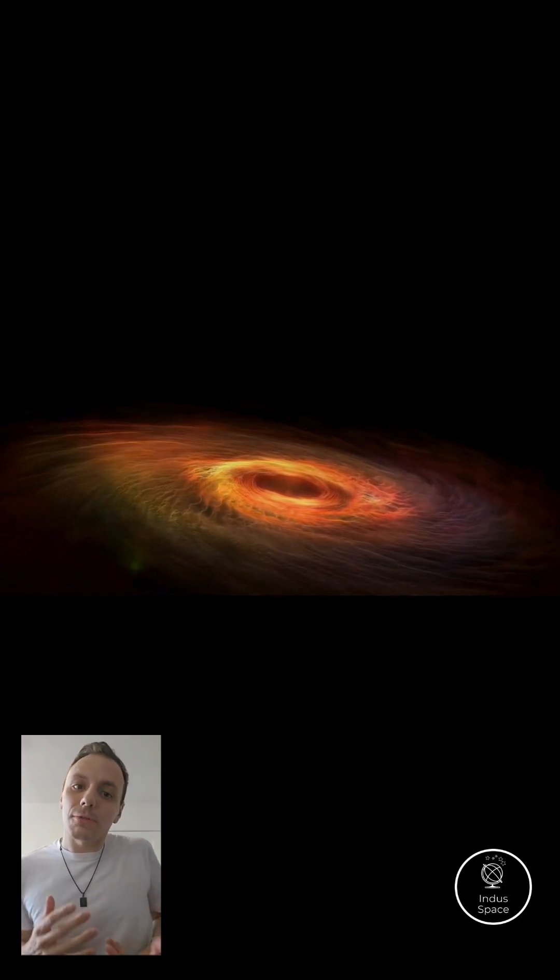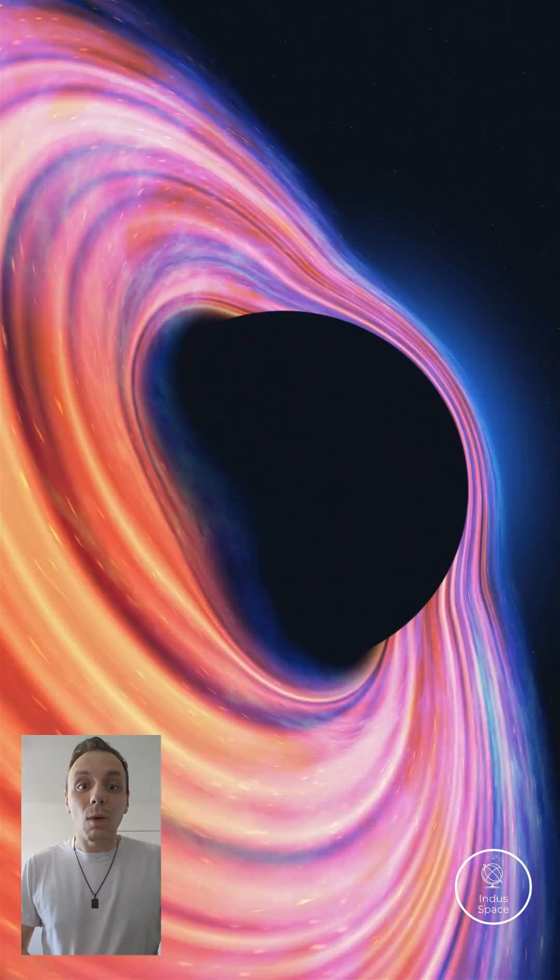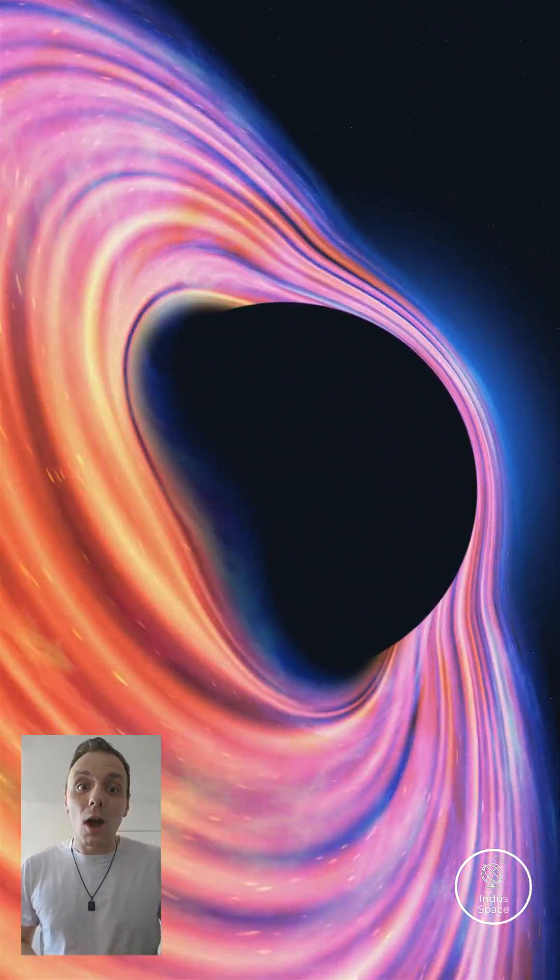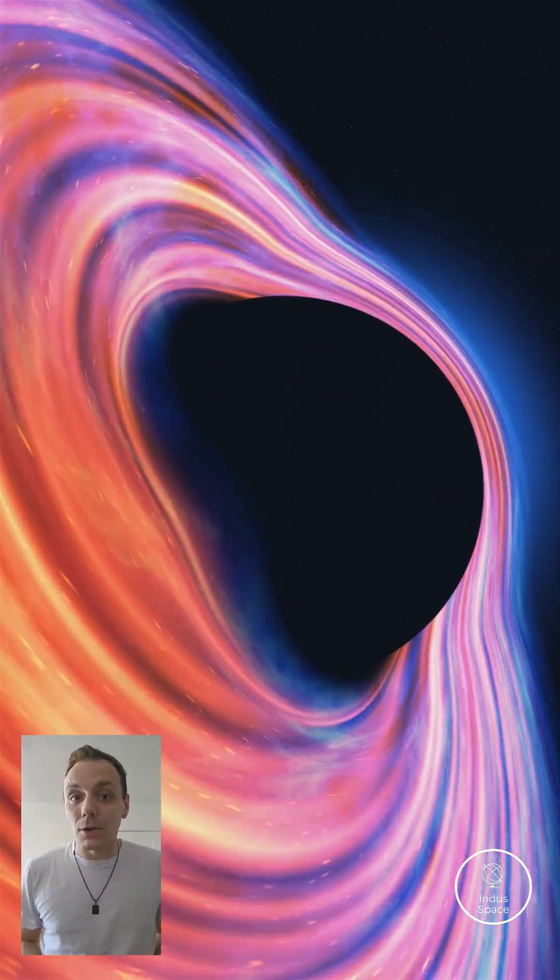The smallest black holes are just a few times the mass of our own sun, while the largest ones, called supermassive black holes, are billions of times the mass of our own solar system and sit at the centers of galaxies.